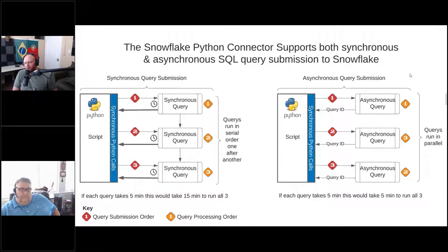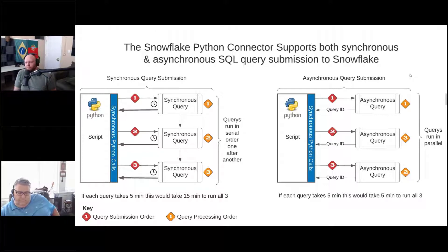In many of these cases, this is compute you have already paid for that you are now using to its greatest extent. It's using the multi-threading capability in Snowflake and the elastic scalability to scale up as well as scale horizontally.